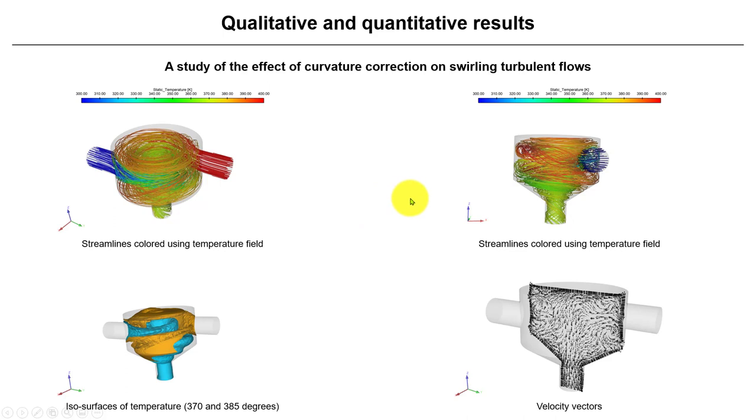So this is the goal of this correction. Again, it works similar as previously. You just need to enable, but now instead of thinking about the effect of the wall of the geometry, now it's just the swirling of the flow.